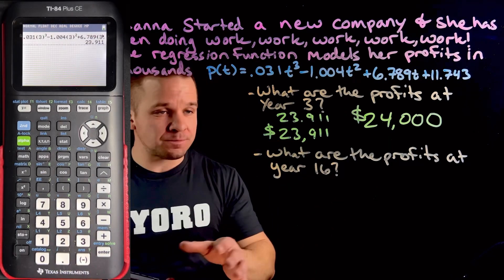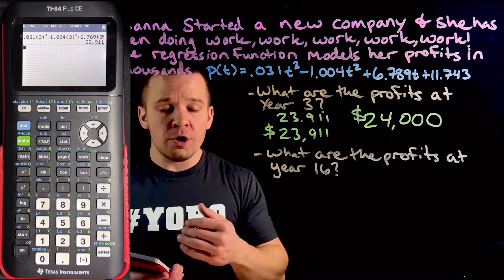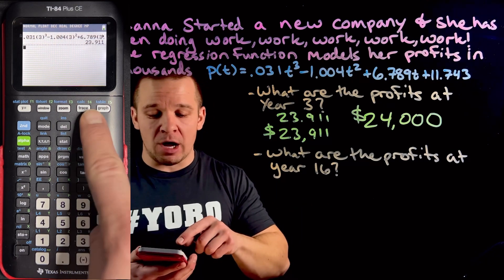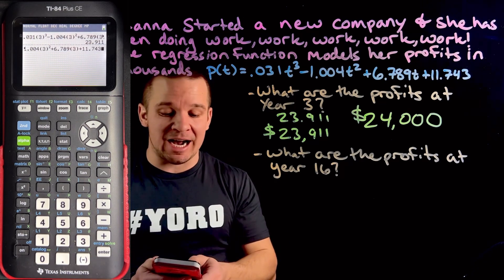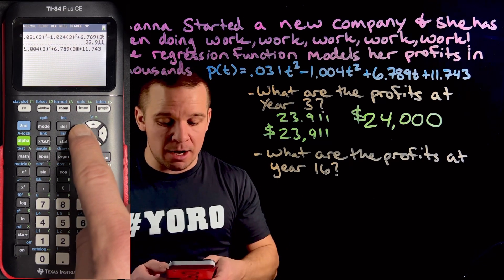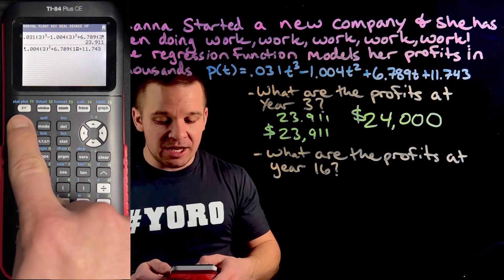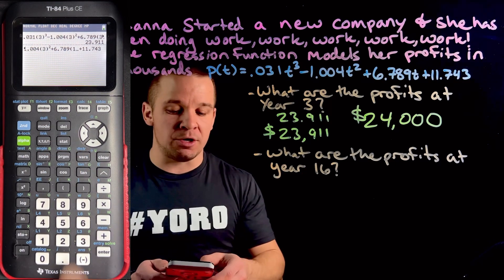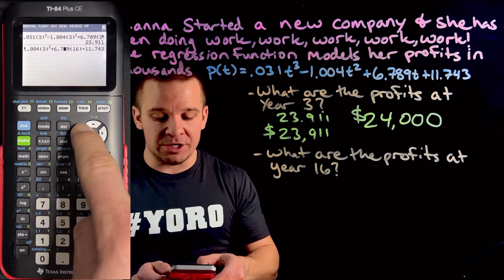Now for this, we can either retype it all in or you can write over the three. So if I arrow up and I hit enter, once my whole big thing is highlighted, I'm going to go arrow back. I'm going to type in 16, but I do have to hit second delete to insert in front of the parentheses.